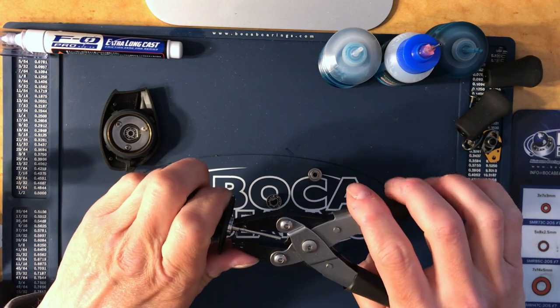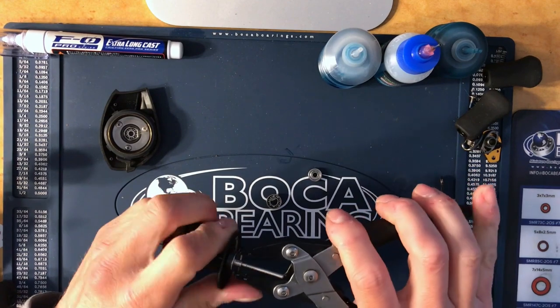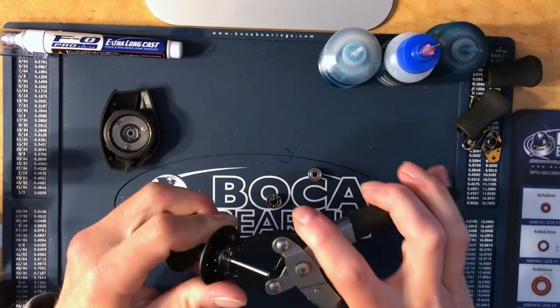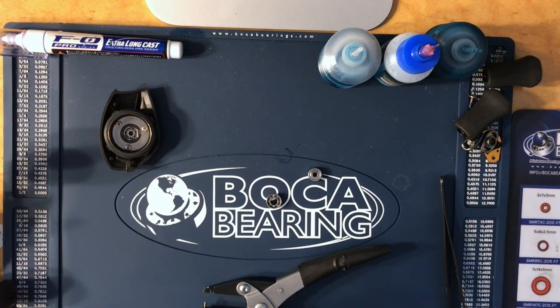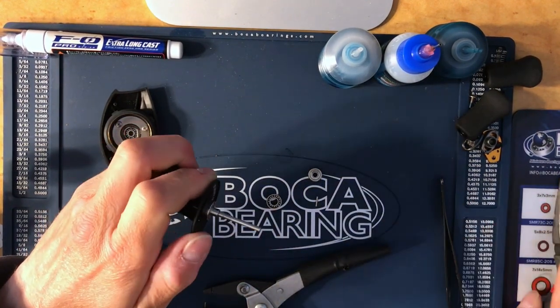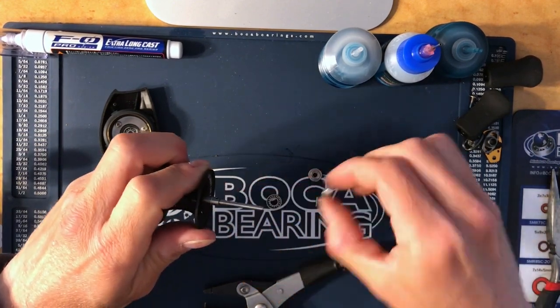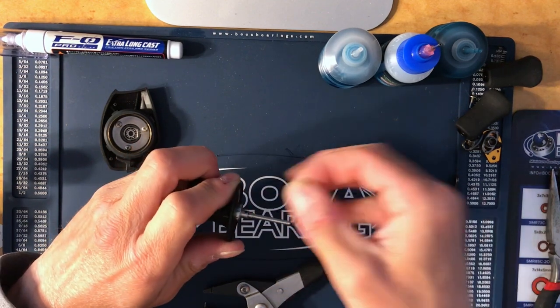And then with the spool pin you just kind of line them up, press it softly. If they won't come out I usually take a pair of needle nose pliers, pull the pin right out. Make sure the pin is in the same direction it came off. Slide the bearing off, put the new bearing on.